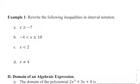Let's look at some examples — rewriting the following inequalities in interval notation. The first one: X is greater than or equal to negative 7. That means it's an unbounded interval going towards the positive direction. We write that with brackets, and it's going to be negative 7 as our lower value to positive infinity.